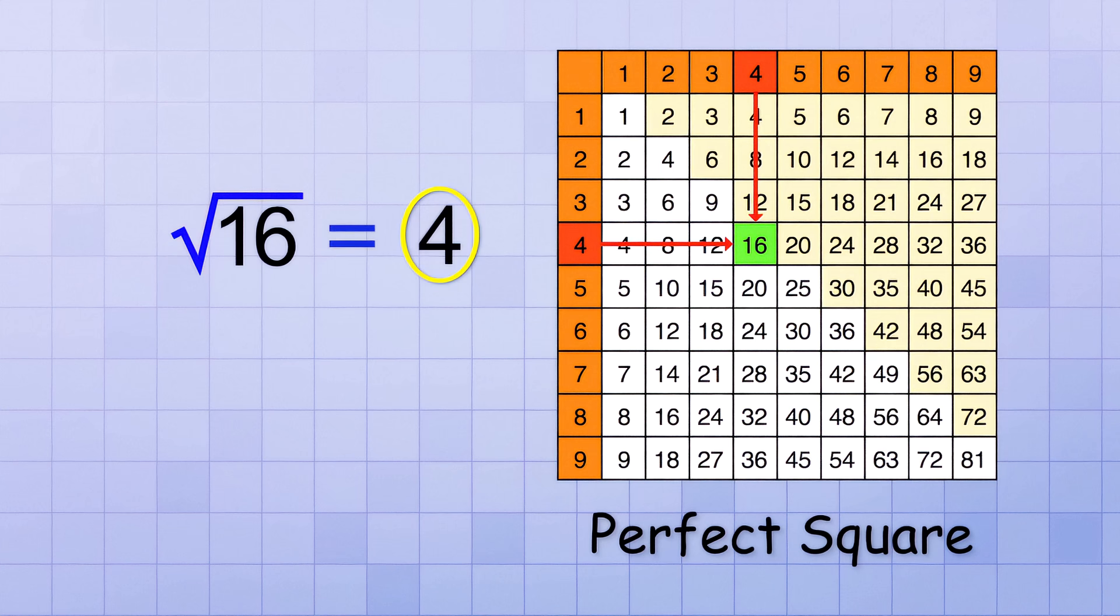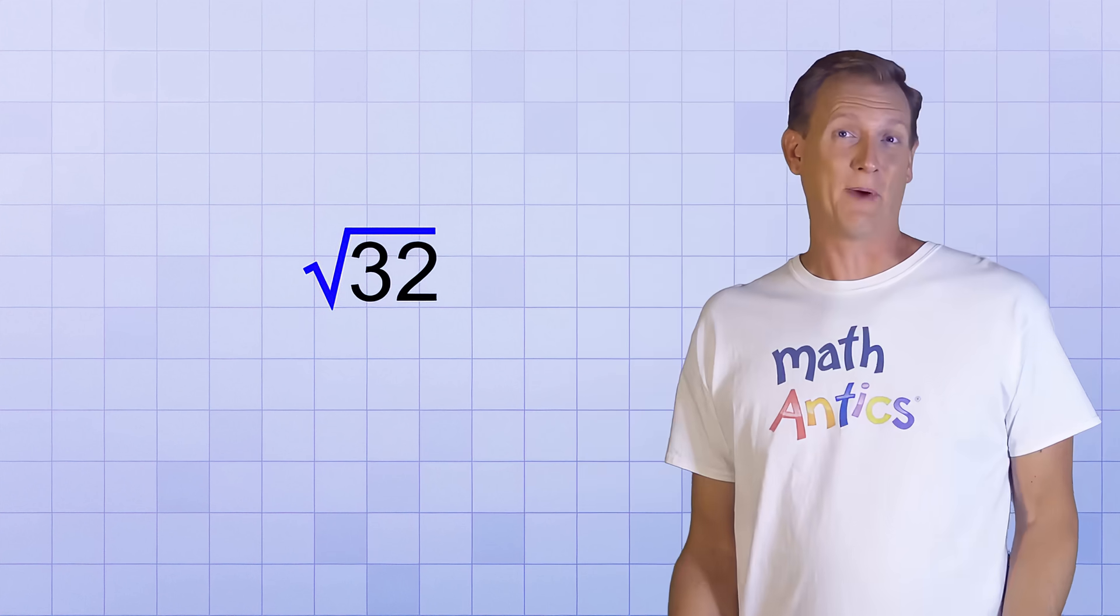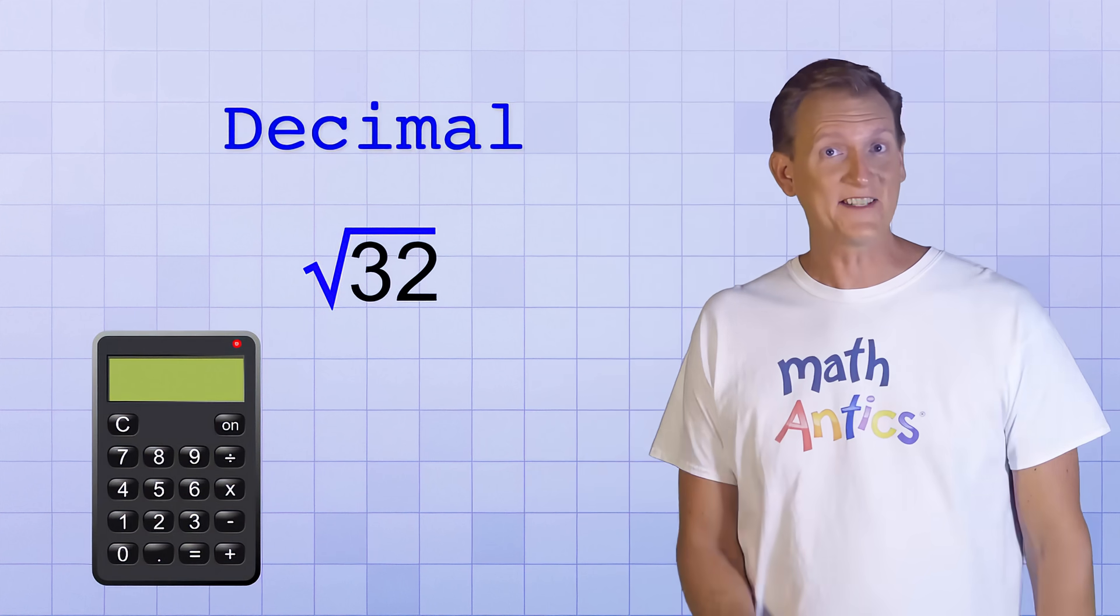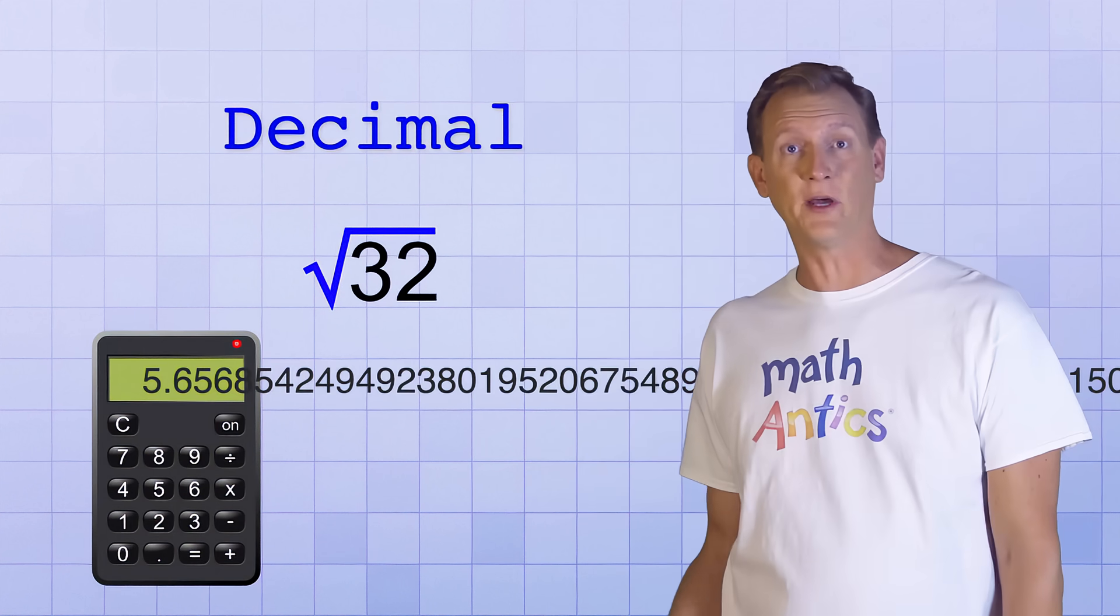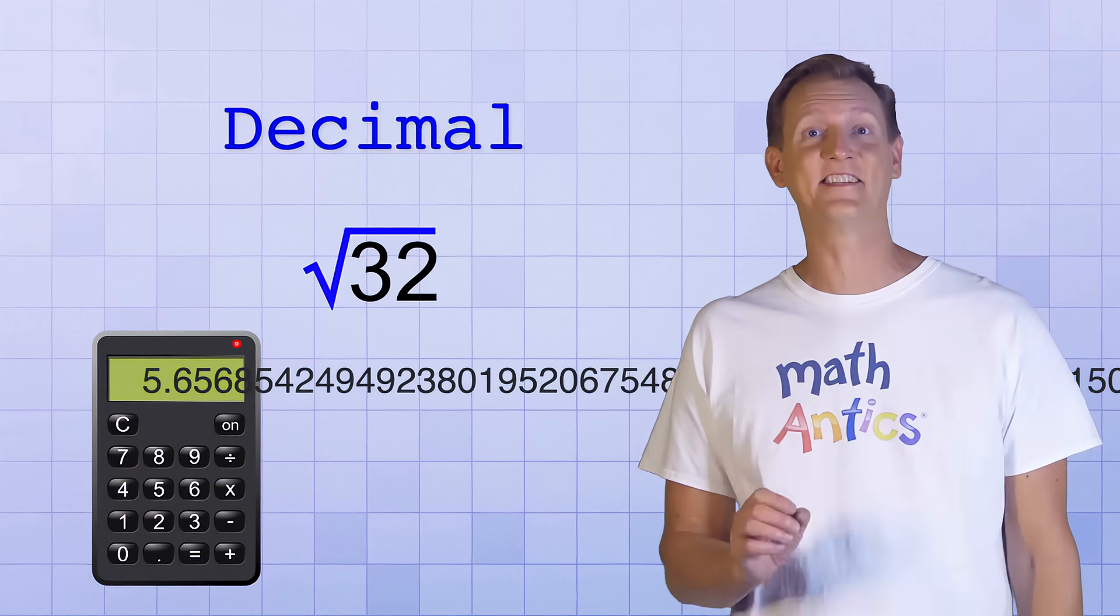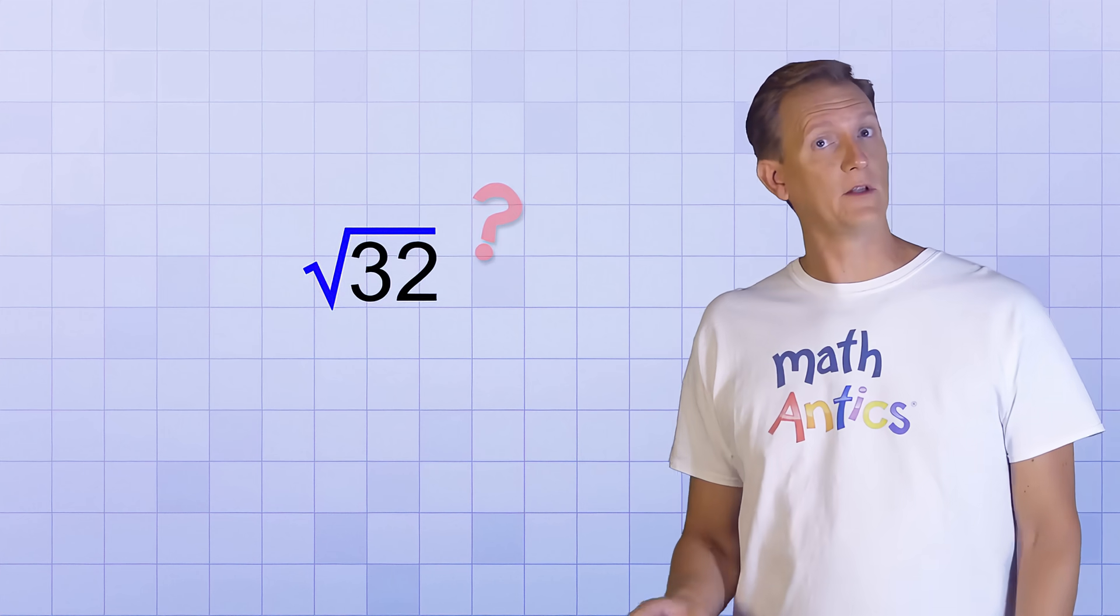But what if you do a different problem and end up with the answer, the square root of 32? Well, 32 isn't a perfect square, so we can't simplify it to a nice whole number like we could with the square root of 16. You might consider using a calculator to convert it to a decimal value, but in this case we'd end up with an irrational number, which is a never-ending, never-repeating decimal. And that's definitely not a simpler way to write it.